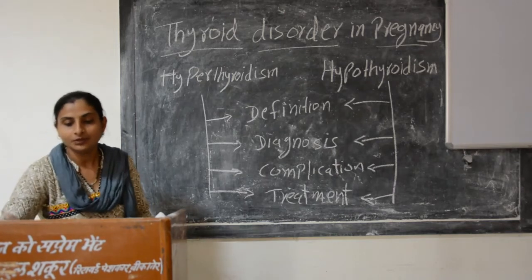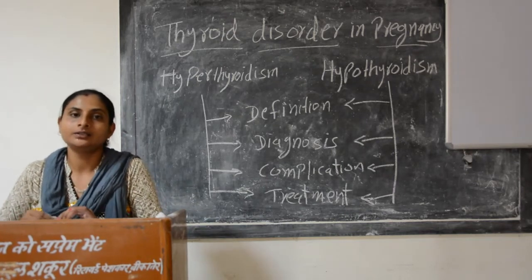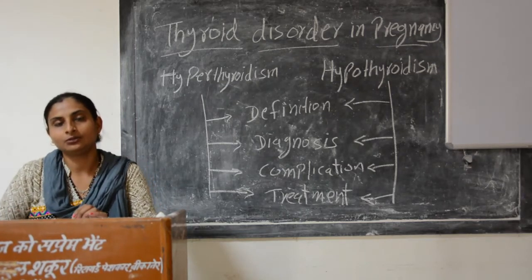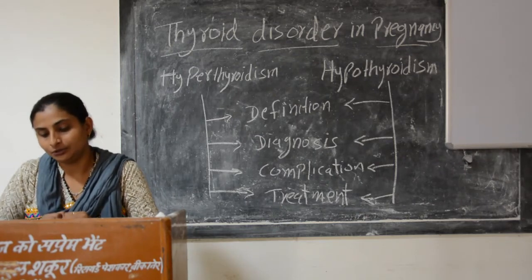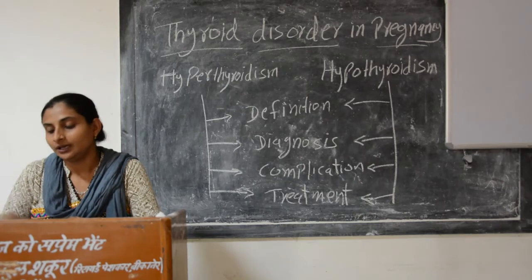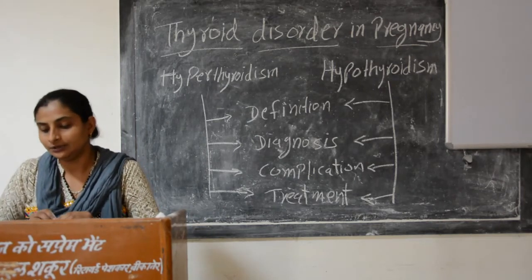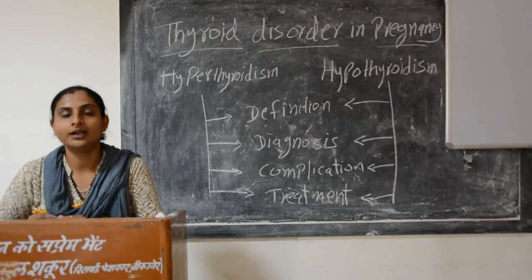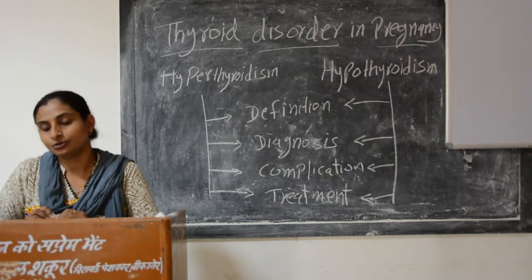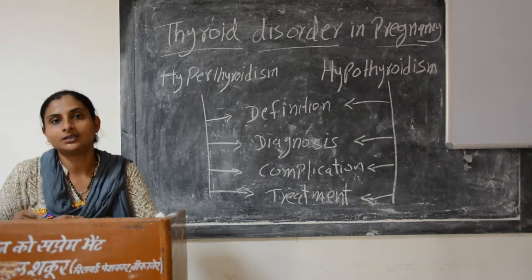What is the cause of hyperthyroidism? The secretion of the hormone is increased due to an autoimmune disease called Graves' disease. The excess thyroid hormone condition is called thyrotoxicosis.